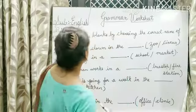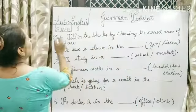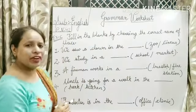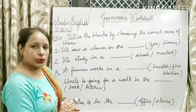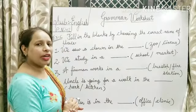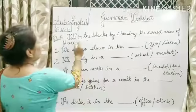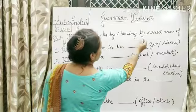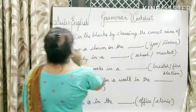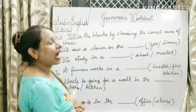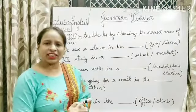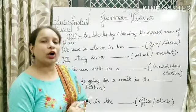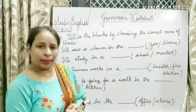So let's start. This exercise is given on page number 42 of your English book. Fill in the blanks by choosing the correct name of place. Your names of things, place, persons, animals — these are called nouns, or naming words.